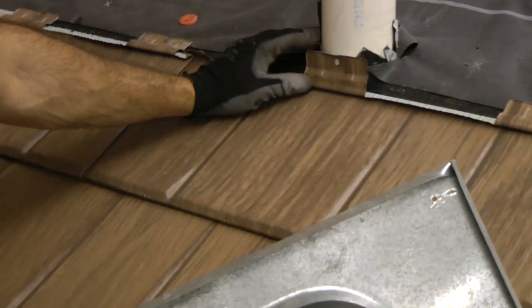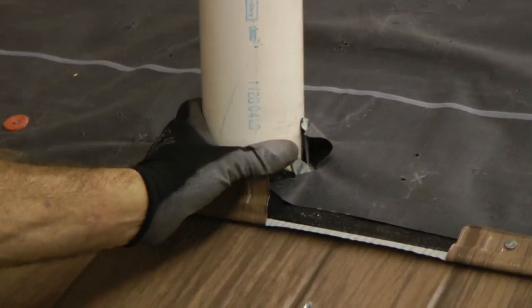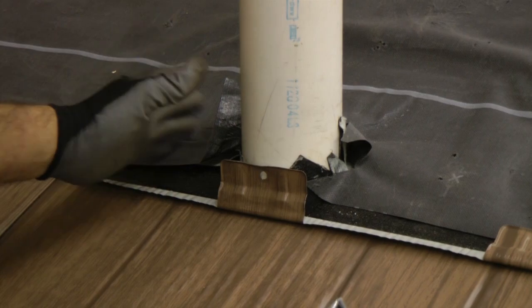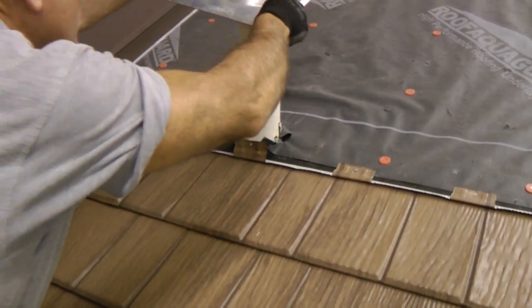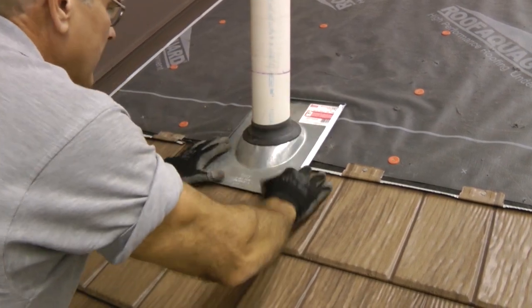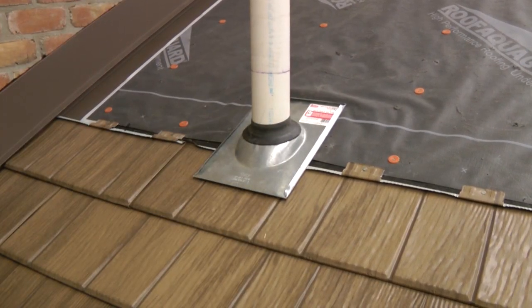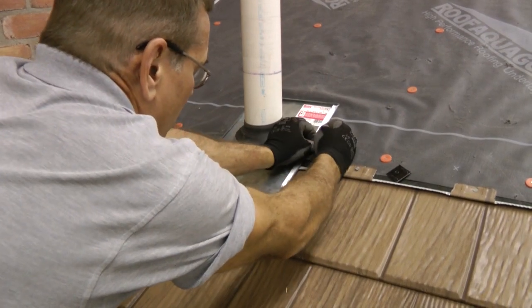When we put the underlayment on, we allowed the underlayment to come up around the pipe just a little. You can put roofing cement or sealant around this as well. I'll seat it fully down to the deck, and now I can take nail clips, one on each side.